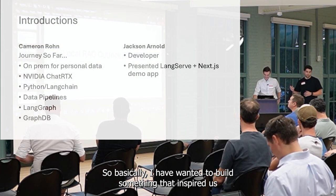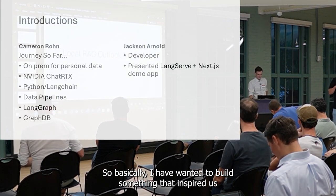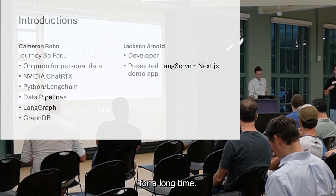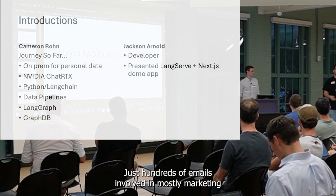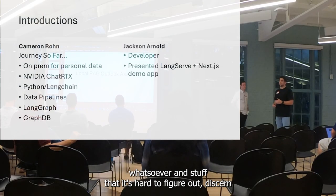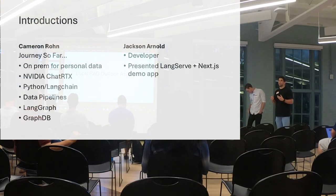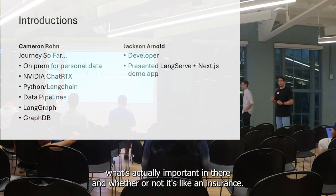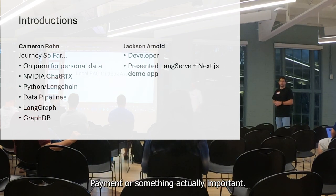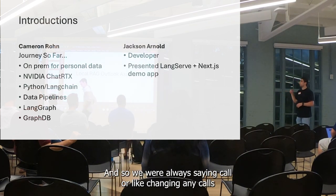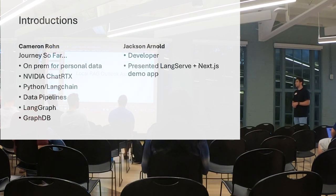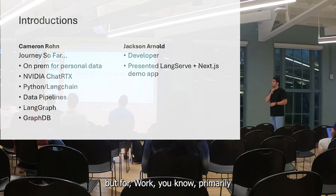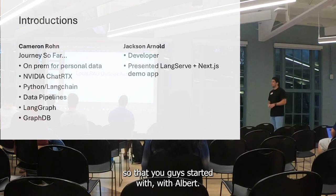Basically, I have wanted to build something that manages my emails for a long time. My personal email right now has hundreds of emails flowing in, mostly marketing, and a bunch of random stuff — it's hard to figure out what's actually important, whether I'm going to miss an insurance payment or something critical. We were on the same LangChain community call, I threw it out there, and he said he'd actually been working on something similar, but for a work email primarily. So then we got started with Outlook.